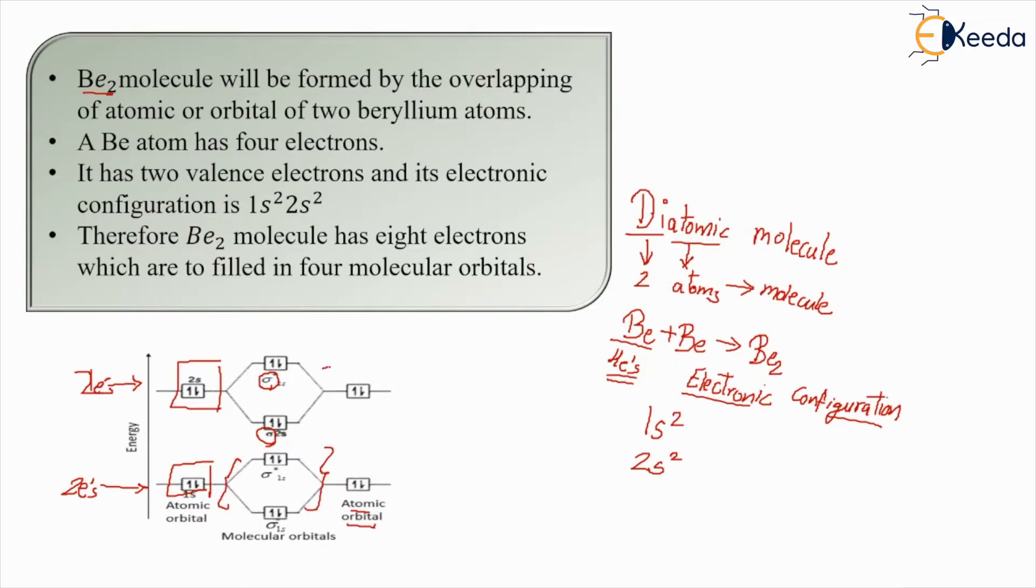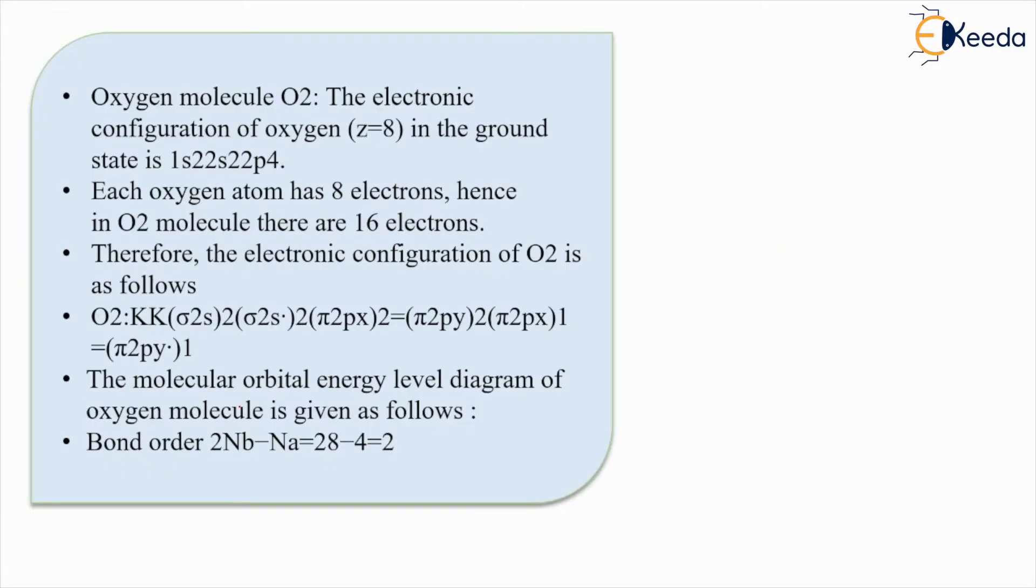Another example over here is O2. O2 is nothing but oxygen. Again we can figure out that this is diatomic in nature - oxygen O2, one oxygen plus another oxygen will give us O2. Now this has a Z of eight, that means eight electrons.